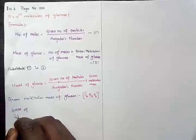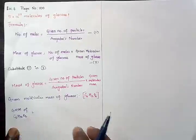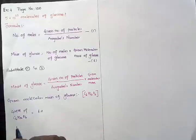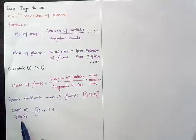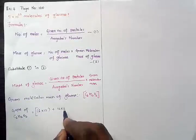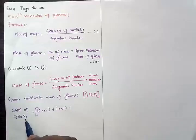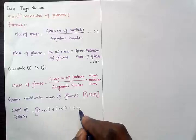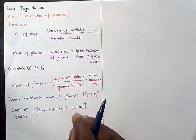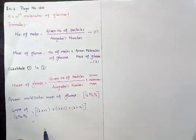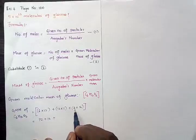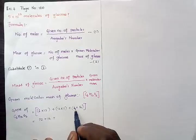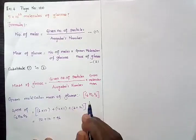GMM of C6H12O6 equals: how many carbon atoms? 6, so 6 × 12 (atomic mass of carbon); plus how many hydrogen atoms? 12, so 12 × 1 (atomic mass of hydrogen); plus how many oxygen atoms? 6, so 6 × 16 (atomic mass of oxygen). Calculating: 6 × 12 = 72, plus 12 × 1 = 12, plus 6 × 16 = 96.